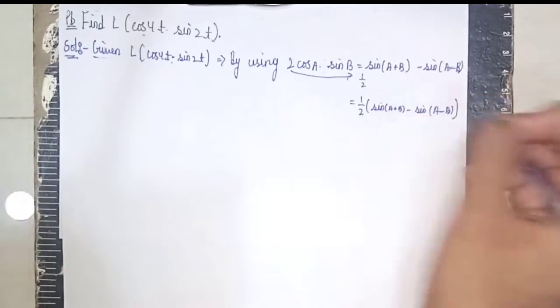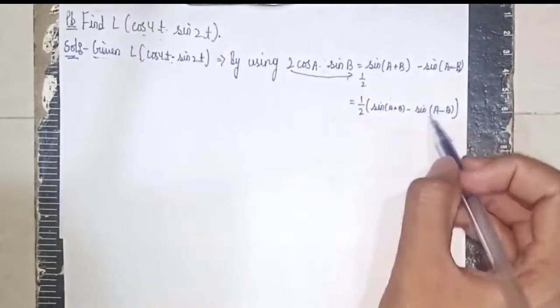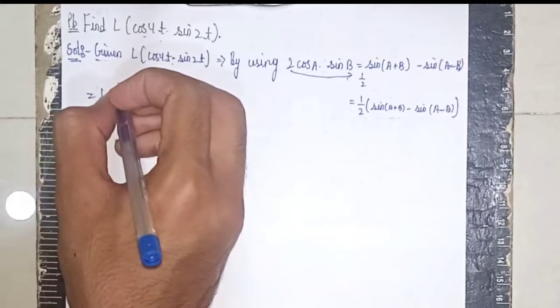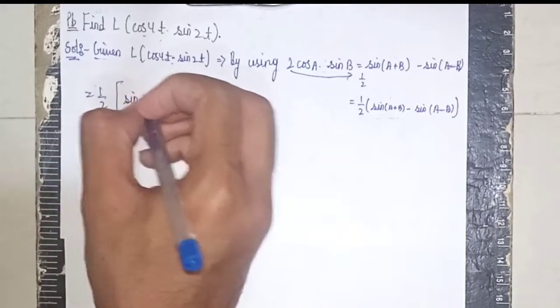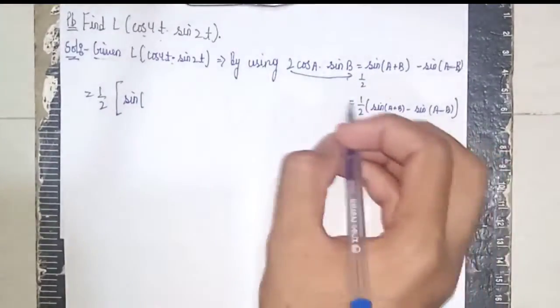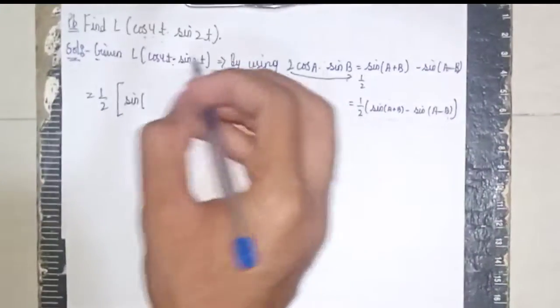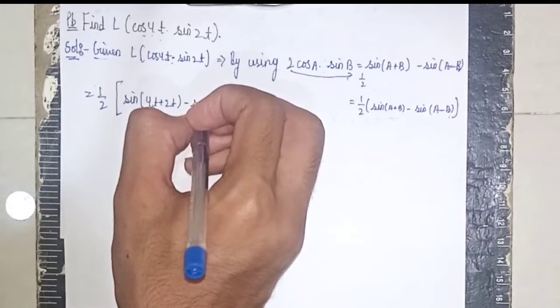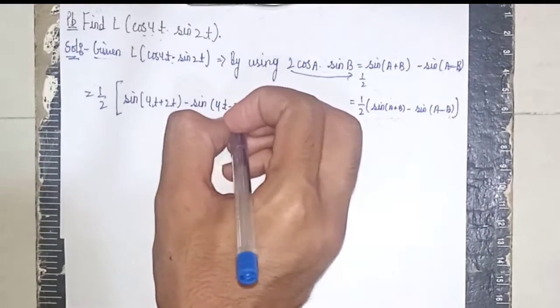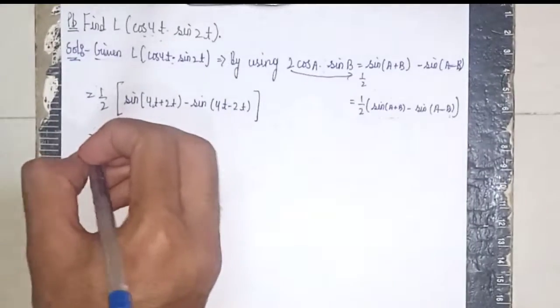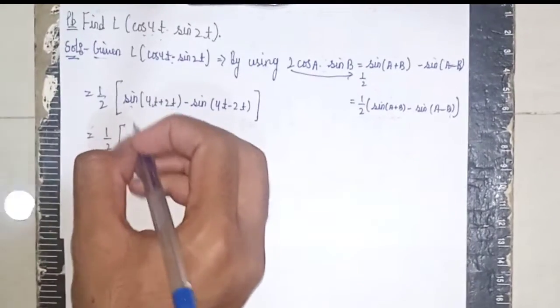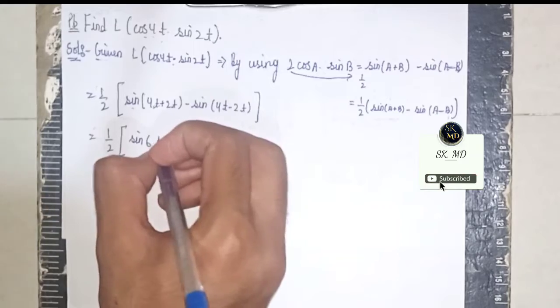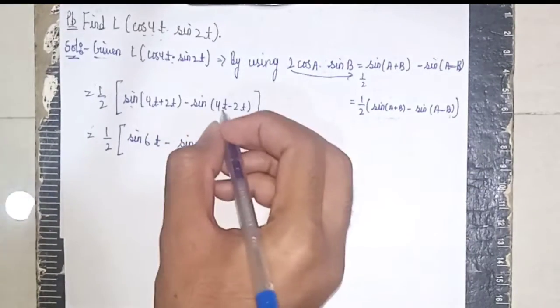Now instead of this, you have to write this. So it becomes equal to 1 by 2 open the bracket sin, now here a is 4t and b is 2t, so it becomes sin (4t plus 2t) minus sin (4t minus 2t). This becomes 1 by 2 bracket sin 6t minus sin 2t.